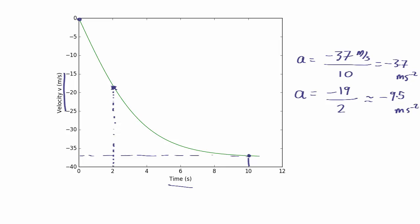So we've got two very different accelerations. We can do another one. What's the acceleration between 6 seconds and 10 seconds? The acceleration is the change in velocity that's gone from minus 34 to minus 37. So that's about a minus 3 change over 4 seconds. That's about minus 0.75 meters per second squared.